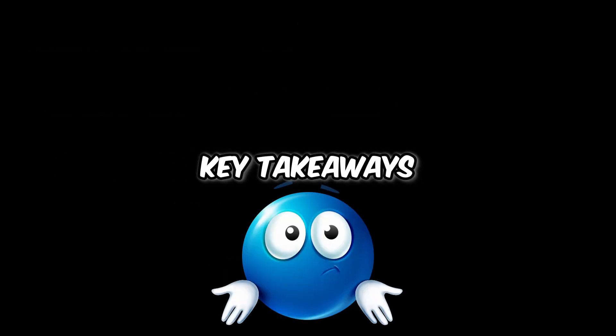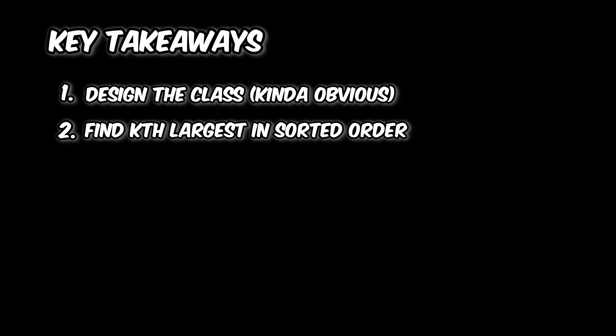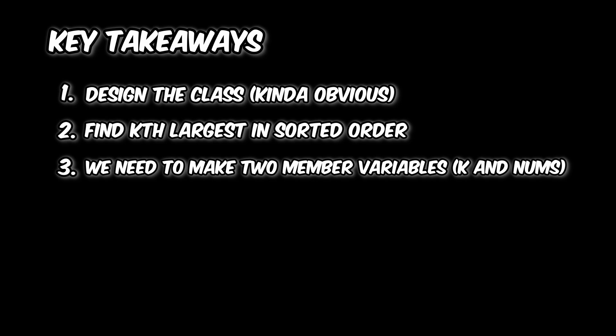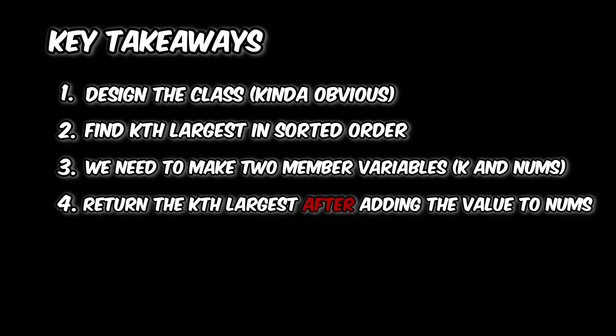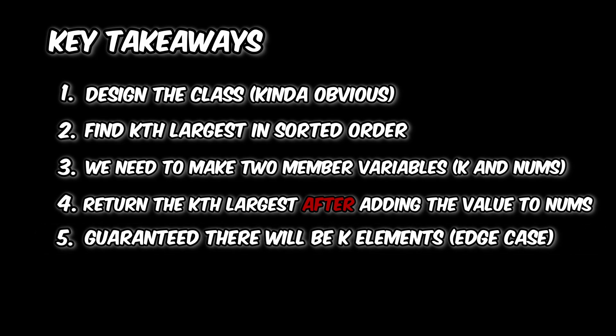So what are the key takeaways from this problem? The first key takeaway is that we have to design the class itself. The second is that we have to find the kth largest in sorted order, not in the order that we're given. The third is that we need to initialize the class with two member variables, k and nums. The fourth is that the add method only needs to add the number to our nums and return the kth largest after adding the number. The last key takeaway is that we're guaranteed there will be at least k elements.